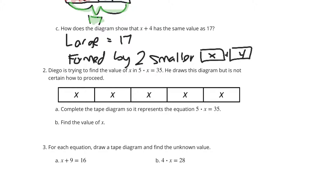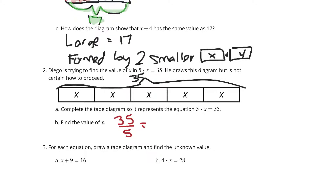Complete the tape diagram so it represents the equation 5 times x equals 35. This thing, when you multiply together, is going to be 35. To find the value of x, each of these five parts are equal. So if I take 35 and divide it by 5, I get 7. So x equals 7. You can visually see that 7, 7, 7, 7, 7 — 5 times 7 is 35 — but generally just divide by 5, you get 7, and there's your solution.